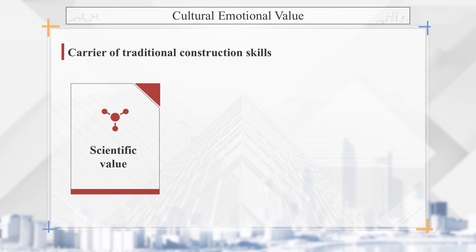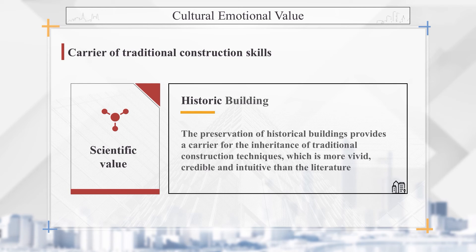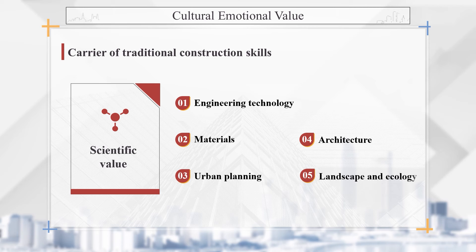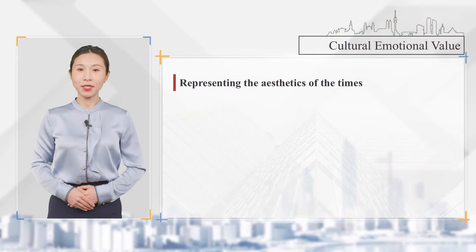Scientific value in cultural emotional value is that the preservation of historical buildings provides a carrier for the inheritance of traditional construction techniques, which is more vivid, credible, and intuitive than literature. It mainly reflects achievements in engineering technology, materials, urban planning, architecture, landscape, and ecology.